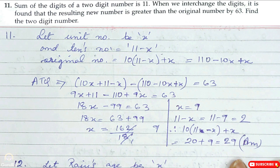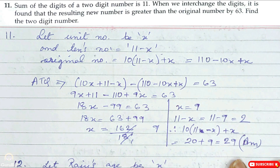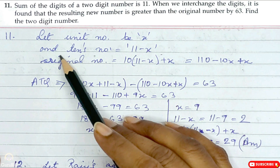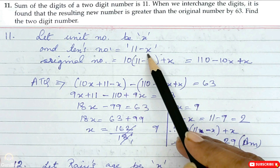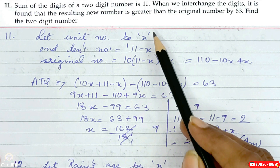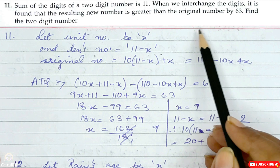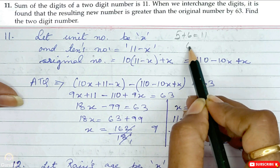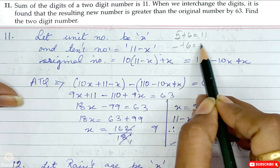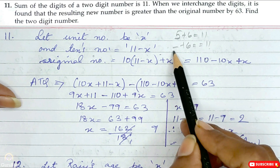Question number 11: The sum of the digits of a two-digit number is 11. When we interchange the digits, the resulting new number is greater than the original by 63. Find the two-digit number. Let the unit digit be x and the tens digit be (11 minus x). For example, if one digit is 6, the other is 11 minus 6 = 5.